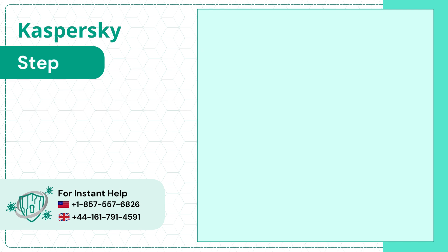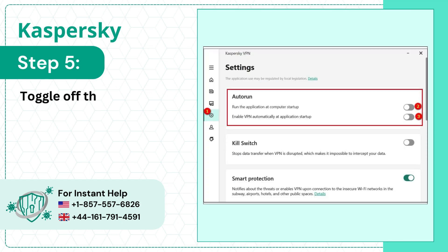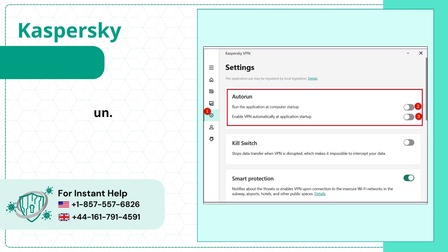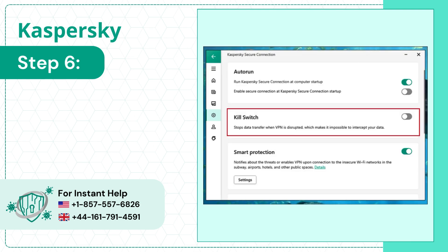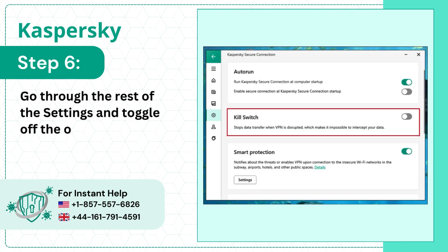Step 5: Toggle off the options under Autorun. Step 6: Go through the rest of the settings and toggle off the options.